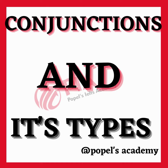Correlative conjunctions: these conjunctions are used in pairs to connect words, phrases, or clauses of equal importance. The most common correlative conjunctions are either/or, neither/nor, both/and, not only/but also, and whether/or. Example: she can either take the bus or walk to work.